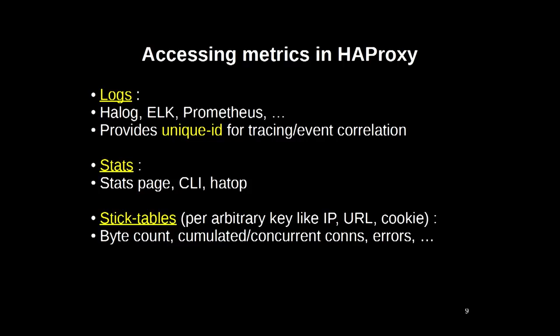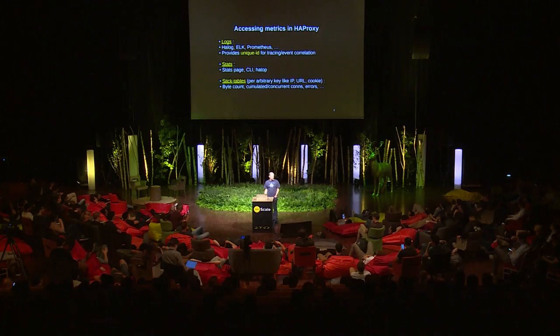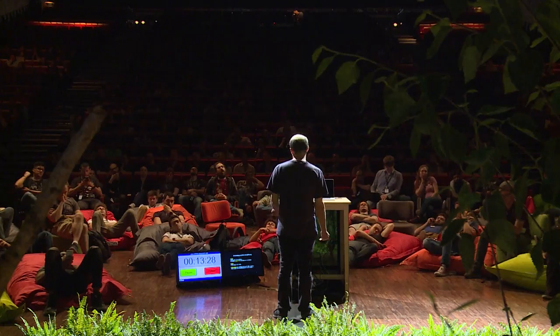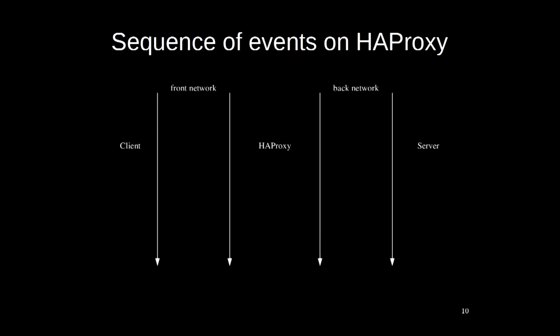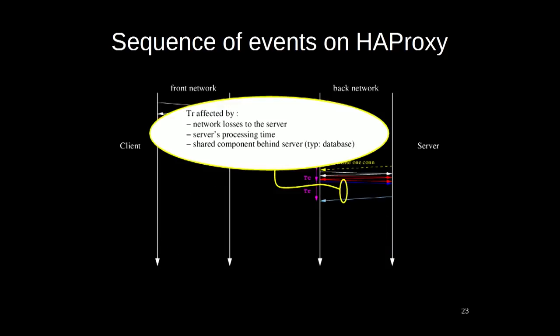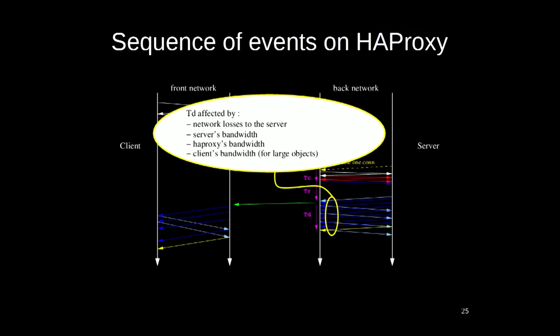In HAProxy, a number of metrics are available in various outputs. You have long-term metrics in logs. HAProxy can help correlate logs by placing unique ID headers in requests so that all elements in your infrastructure share the same trace identifier. You have short-term elements on the stats page, and you have key-specific metrics — like session-specific, user-agent-specific, or cookie-specific — in the stick table, which can be used to detect anomalies specific to a client. When a client connects to HAProxy, there are multiple steps, and during all of them HAProxy collects timers influenced by external activity like network losses, CPU time, or bandwidth.